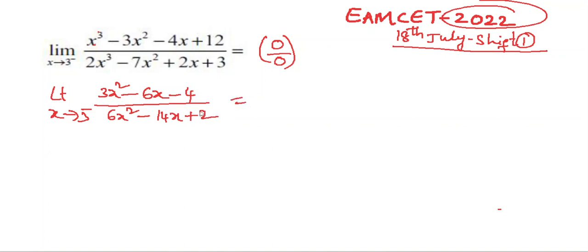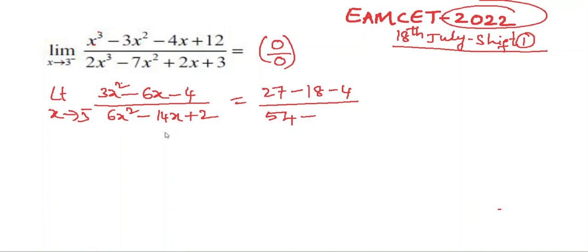Now substituting x = 3: numerator gives 3(9) - 6(3) - 4 = 27 - 18 - 4 = 5. Denominator gives 6(9) - 14(3) + 2 = 54 - 42 + 2 = 14. So the limit is 5/14.